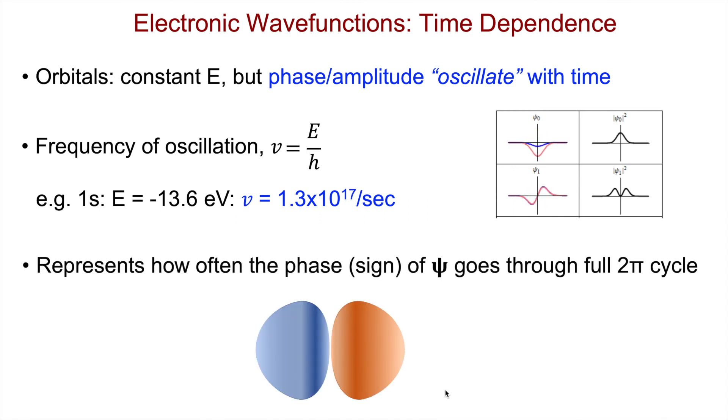This represents how often the phase of the wave function, the sign of the wave function, goes through a full 2π cycle. For example, in this picture here for a 1s orbital, while the wave function may initially be positive, it is oscillating through a full cycle and becomes negative, then positive, and then negative, etc. And this oscillation has a very rapid frequency.